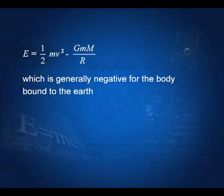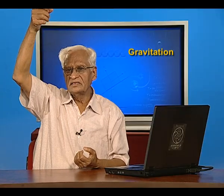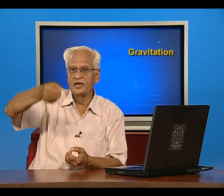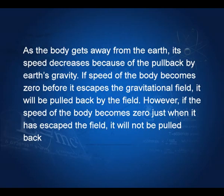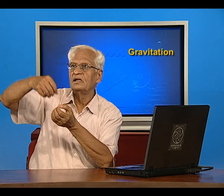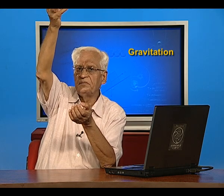Let us write the energy of a particle on the surface of the earth: it has kinetic energy half mv squared and potential energy minus GMm by R. This total energy is generally negative for the particle to be bound to earth. As the body gets away from the earth its speed decreases, because the acceleration due to gravity always acts vertically downwards, reducing the speed. If the speed of the body becomes zero before it escapes the field, it will be pulled back.